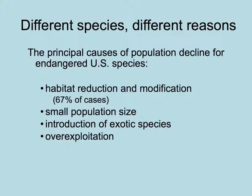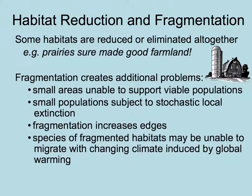In the U.S., the principal causes for population declines of endangered species fall into four categories. First, their habitats have been reduced and modified — the majority of cases. Sometimes populations get so small they can't effectively reproduce. Sometimes new species have been introduced that caused the demolition of a native species. And lastly, some species have been overexploited to extinction. Let's look at each of these reasons in turn.